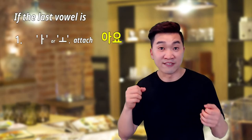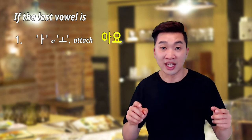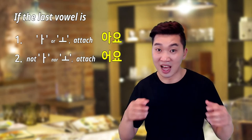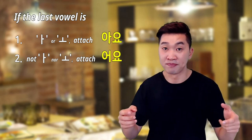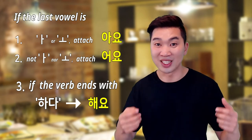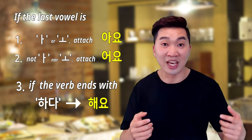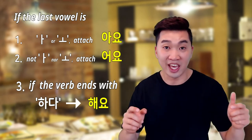Now we are ready to attach 아요 or 어요 to the verb stem. There are three rules. First, if the last vowel of the verb stem is 아 or 오, we attach 아요. Second, if the last vowel is any other vowel rather than 아 or 오, we attach 어요. Third, if the verb ends with 하다, it is called a 하다 verb — just remove 하다 and put 해요 instead.